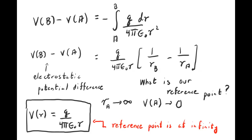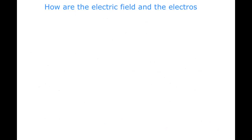So we have defined what we mean by work in electrostatics, introduced something called the electrostatic potential that tells us the work per unit charge, and evaluated it for the simple case of an isolated point charge. All this is nice, but it's not particularly useful until you ask the following question: how are the electric field and the electrostatic potential related?